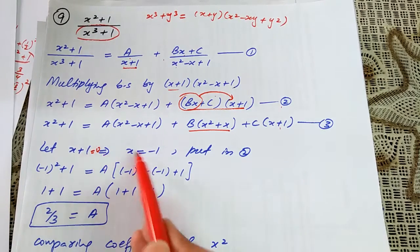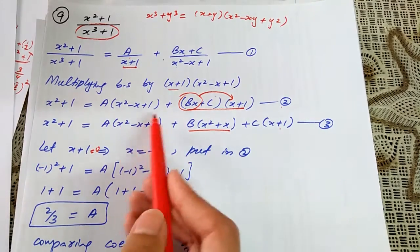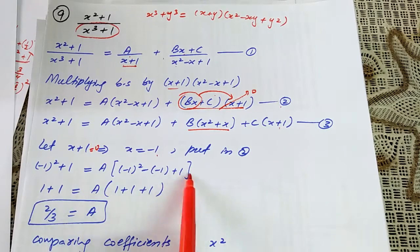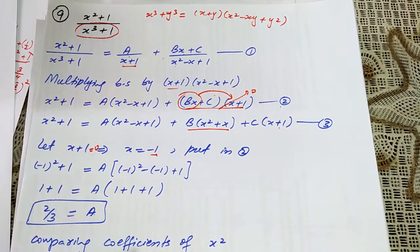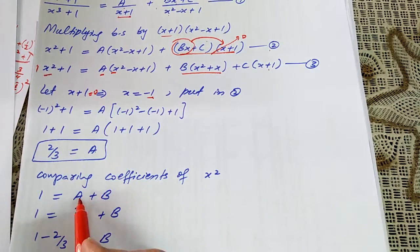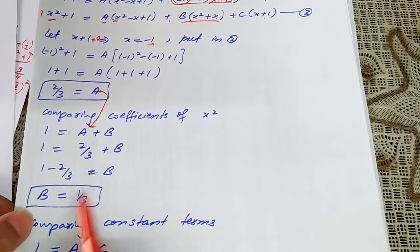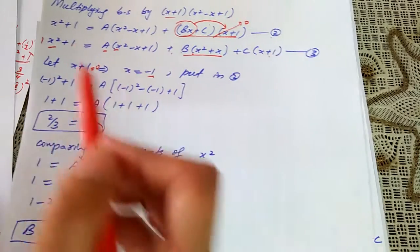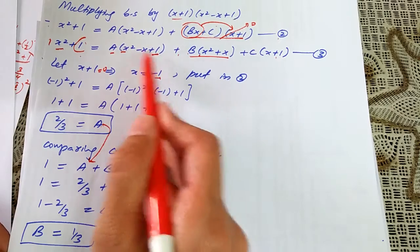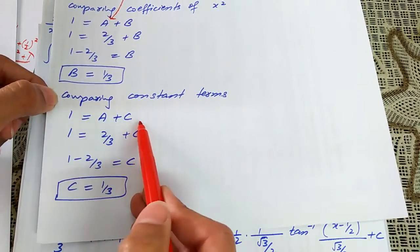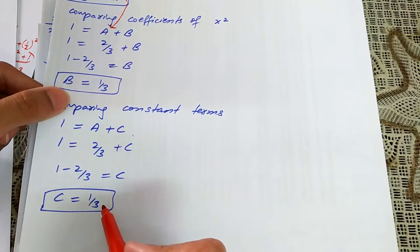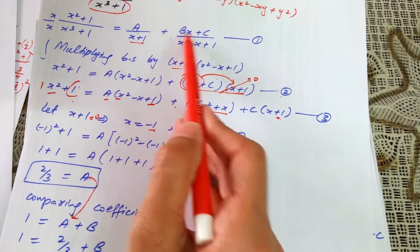Let x + 1 = 0, so x = -1. Substitute into equation 2: the (x + 1) terms go to 0, leaving only the first part. Replacing x with -1 and simplifying gives a = 2/3. Comparing coefficients of x²: on the left it is 1, on the right it is a + b, so b = 1 - 2/3 = 1/3. Comparing constant terms: 1 = a + c, substituting a = 2/3 gives c = 1/3.